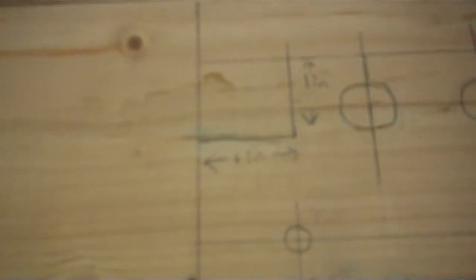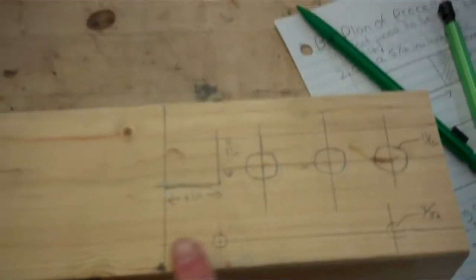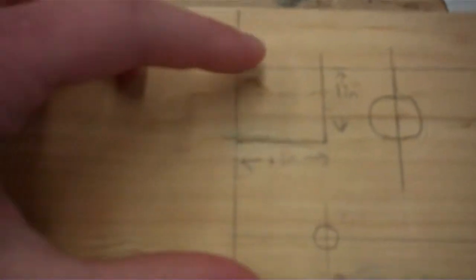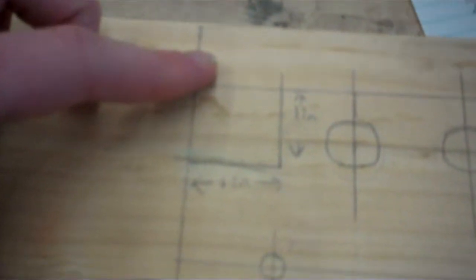First we have to do a cut with a miter saw right here, and the length of this piece of wood is 5 and 1/4 inches. Then we're going to make this cut to make the top of the bus, and that will make the height of the bus 2 and 1/2 inches.